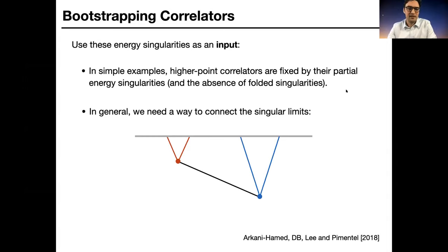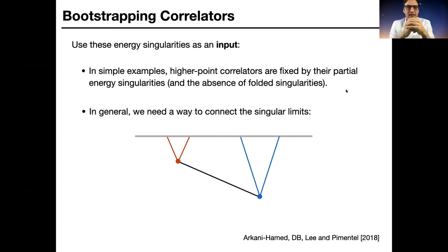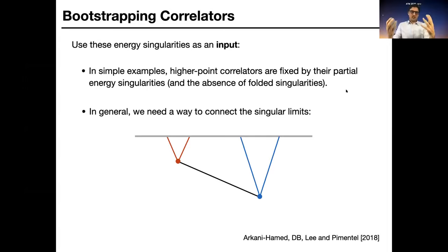In the simplest examples, higher-point correlators are fixed by their partial energy singularities: starting with three-point building blocks and connecting them, they're uniquely fixed by requiring correct factorization. But this is relatively rare — it works for flat-space correlators, but in de Sitter space we need a more general way of connecting these singular limits. We know what the correlator looks like at special kinematic points, but we need to know how they look everywhere — how these points are connected in energy space.